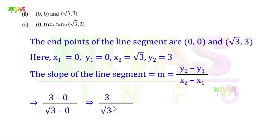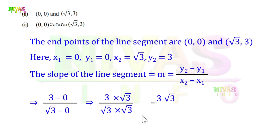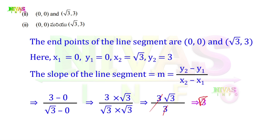So M = 3 / √3. Rationalizing: 3 / √3 = (3 × √3) / (√3 × √3) = 3√3 / 3 = √3. So the slope is √3. This is the answer.